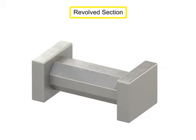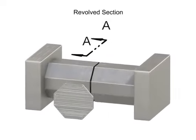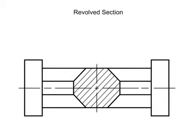A revolved section is created when the cutting plane slices through the feature, but the cut shape is rotated 90 degrees and shown directly on the regular view. Sometimes the new section is shown without brakes, and sometimes it is shown with brakes.